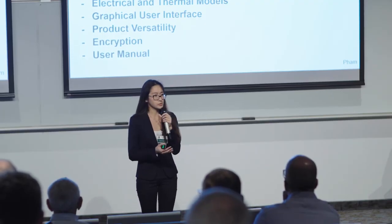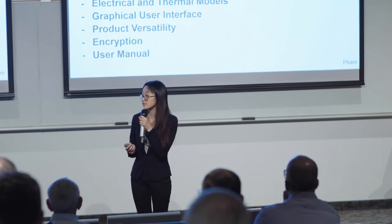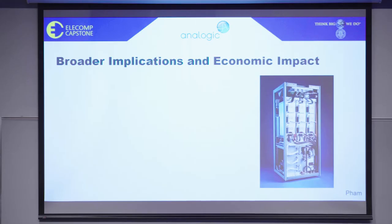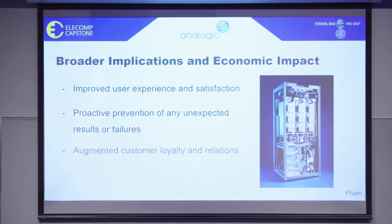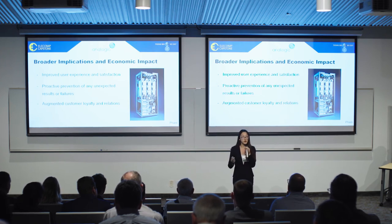Encryption is really important to Analogic as they want to keep proprietary information private and maintain their competitive advantage. And finally, a user manual. Looking at the broader implications, there is significant impact including improved user experience and satisfaction, proactive prevention of unexpected results or failures, and augmented customer loyalty. The bigger picture is that Analogic will be able to market this software package alongside their gradient amplifiers so customers know the product going into hospitals is both safe and reliable.